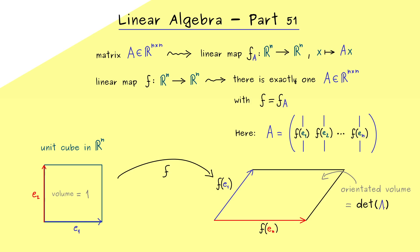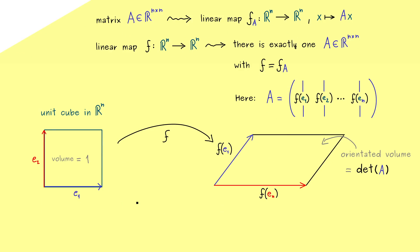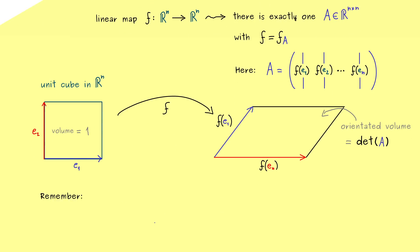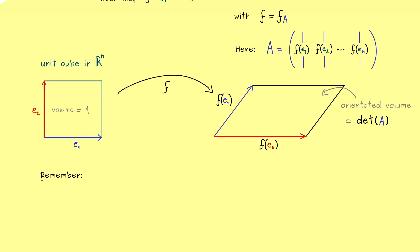And that's something we have already discussed a lot, because it's a parallelepiped and the volume is given by the determinant of A. Of course, we still talk about the general n-dimensional volume. So in summary, we could say the determinant of A tells us how much the volume of the unit cube is changed by the linear map f.